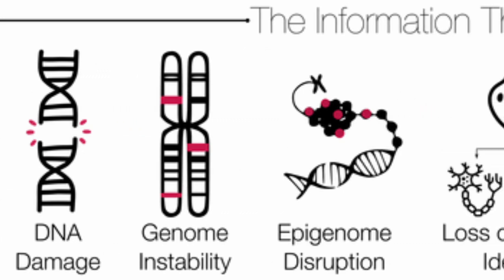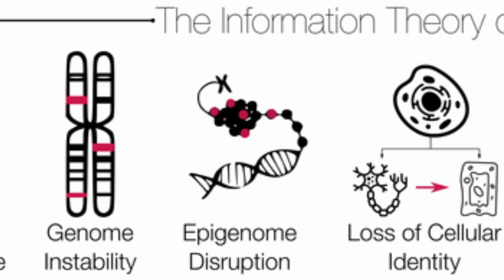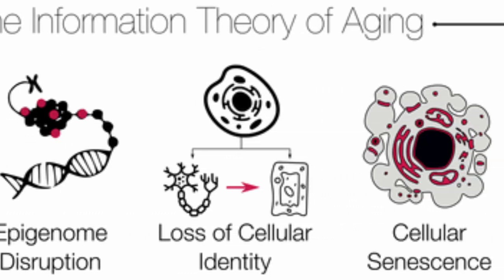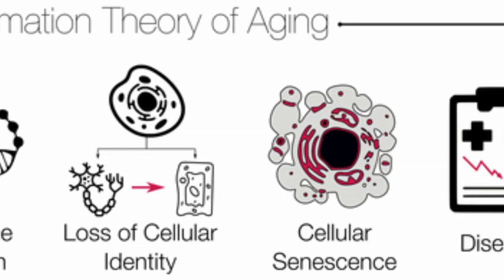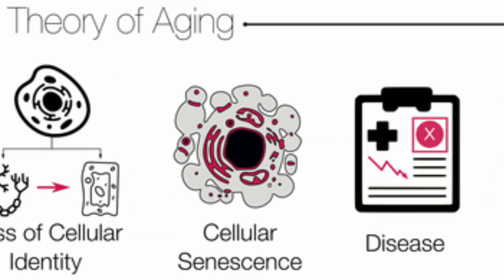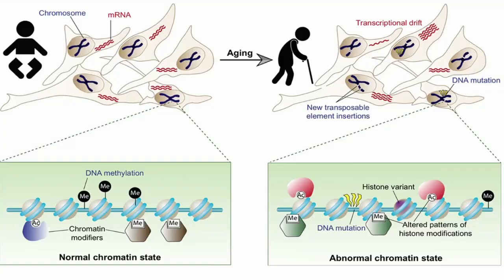To further understand epigenetic alteration, we have to look into what is known as the information theory of aging. Primarily developed by Thomas Kirkwood in the 1970s, the information theory of aging suggests that aging results from the accumulation of errors in an organism's genetic code over its lifespan.